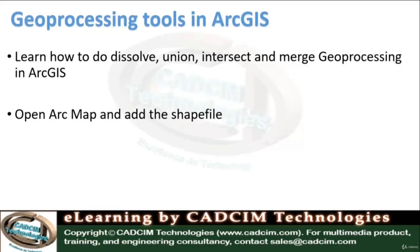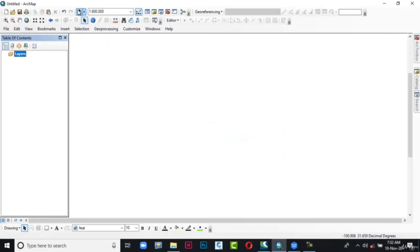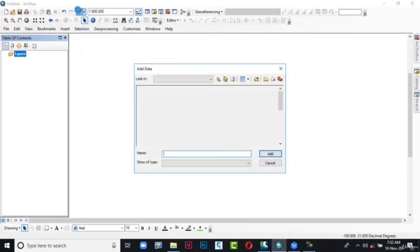Hello and welcome to GIS. Today in this video you will learn how to use dissolve, union, intersect, and merge geoprocessing tools in ArcGIS. Now open ArcMap and add the shapefile. Before that, let's understand the Dissolve tool. The Dissolve tool aggregates features based on specific attributes. Now go to Add Data in the standard toolbar and click on it.